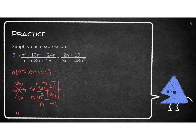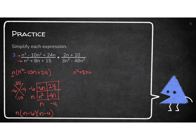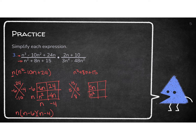Now looking at the bottom of the first fraction: N² plus 8N plus 15. Using the X method — 15 on top, 8 on the bottom — two numbers that multiply to 15 and add to 8: I know 5 and 3. Plugging into the box: N², 5N, 3N, and 15. That gives me N plus 5 and N plus 3.